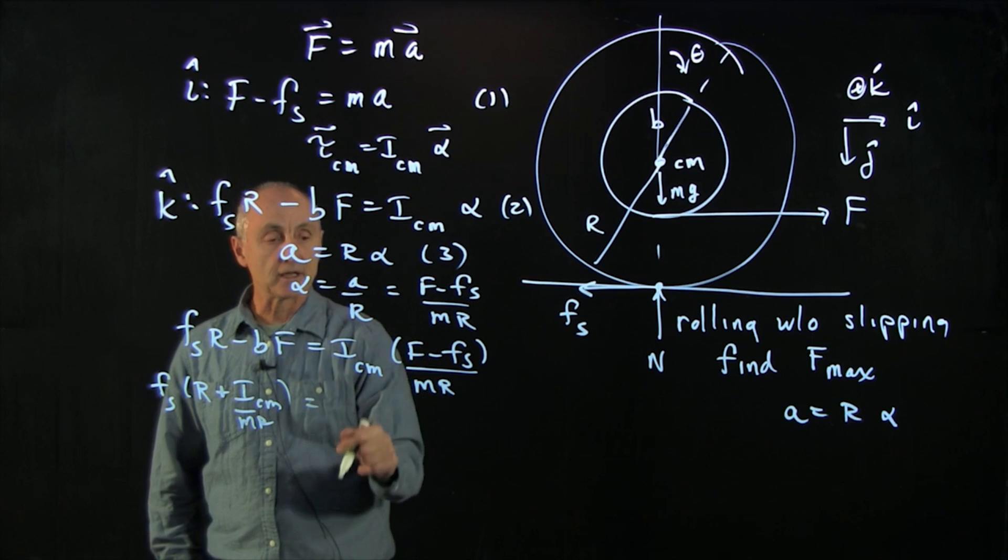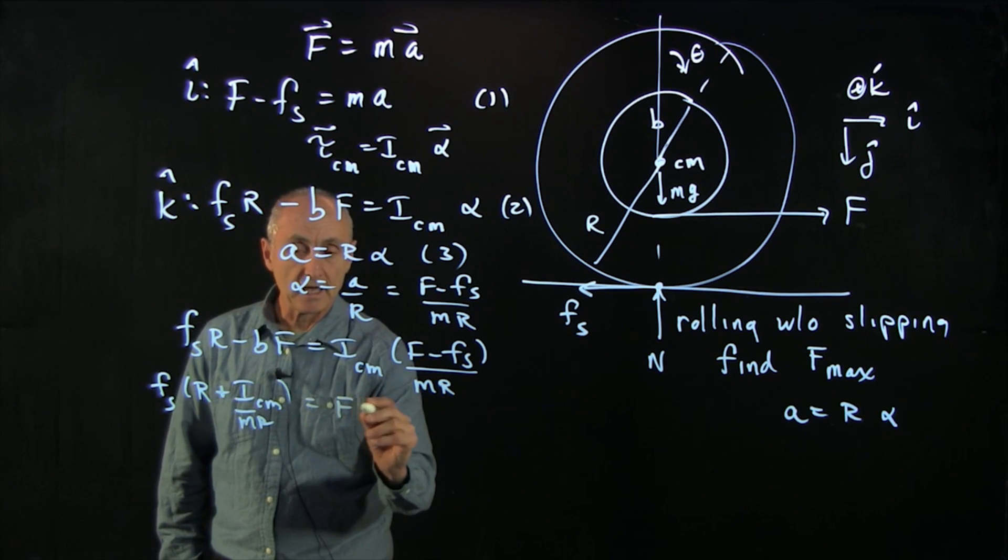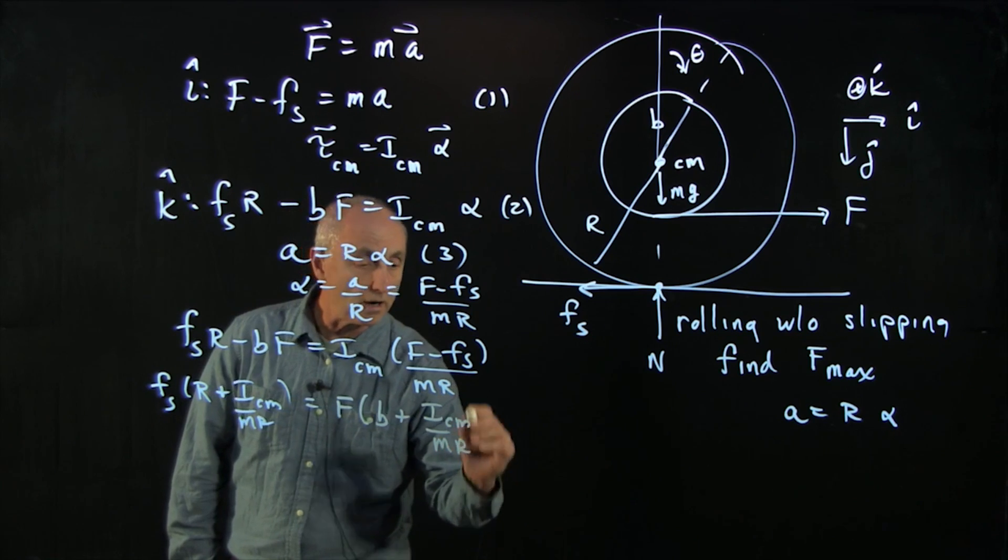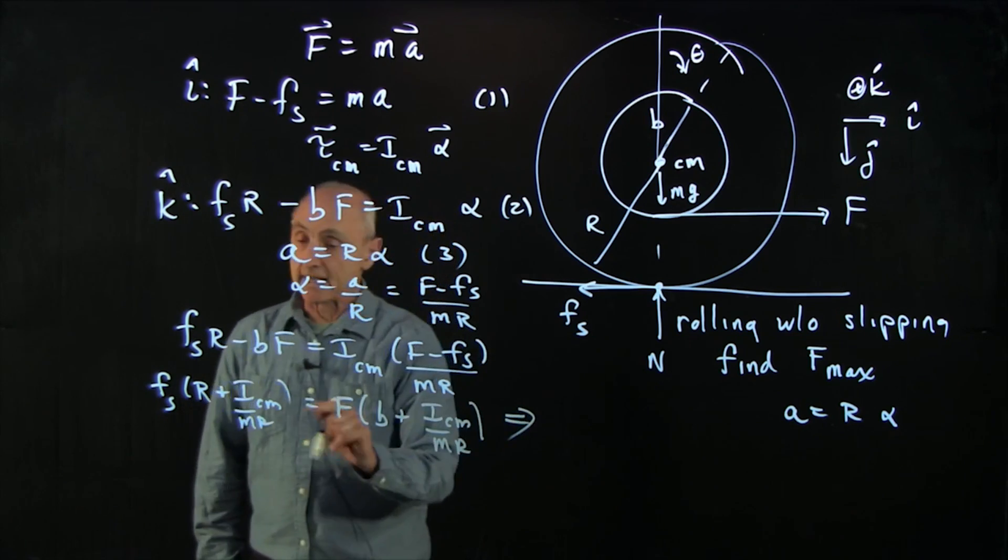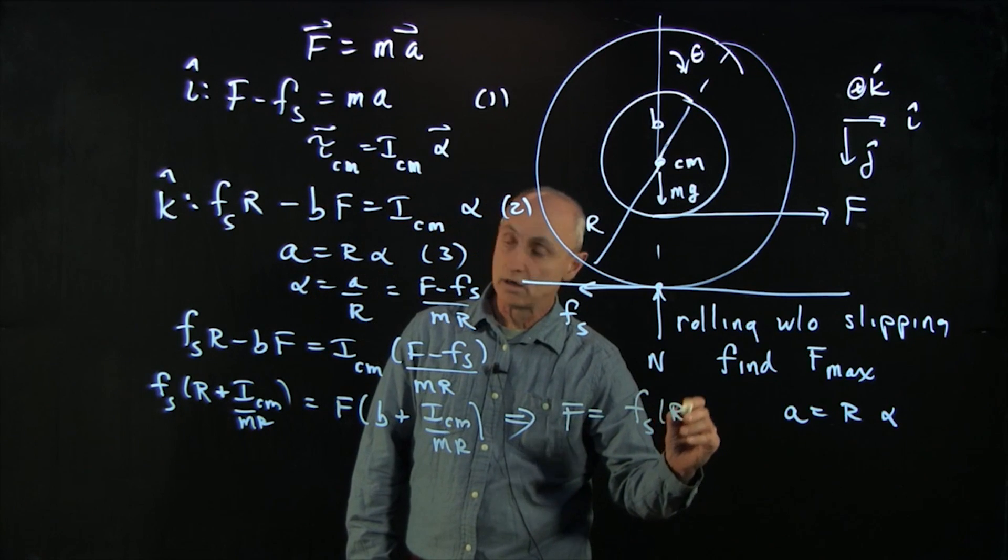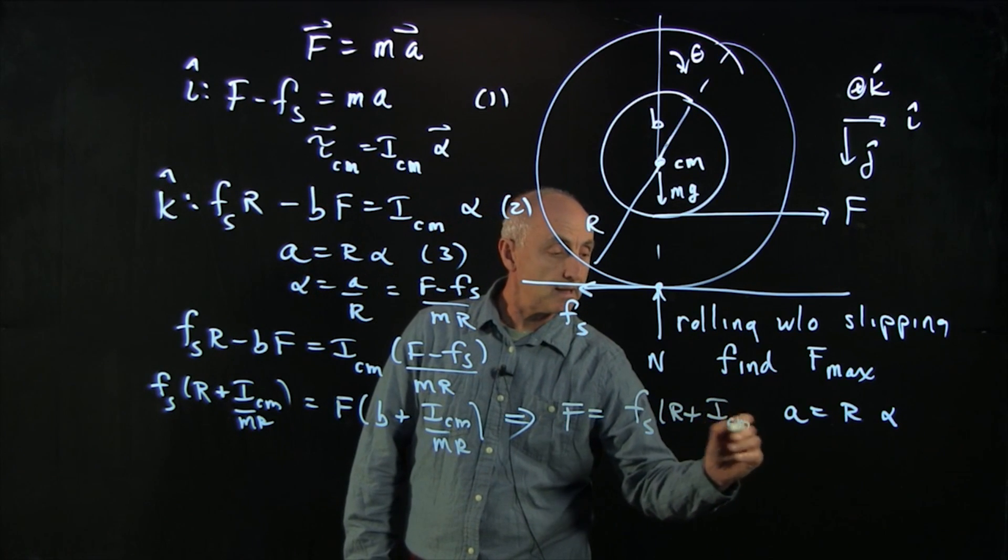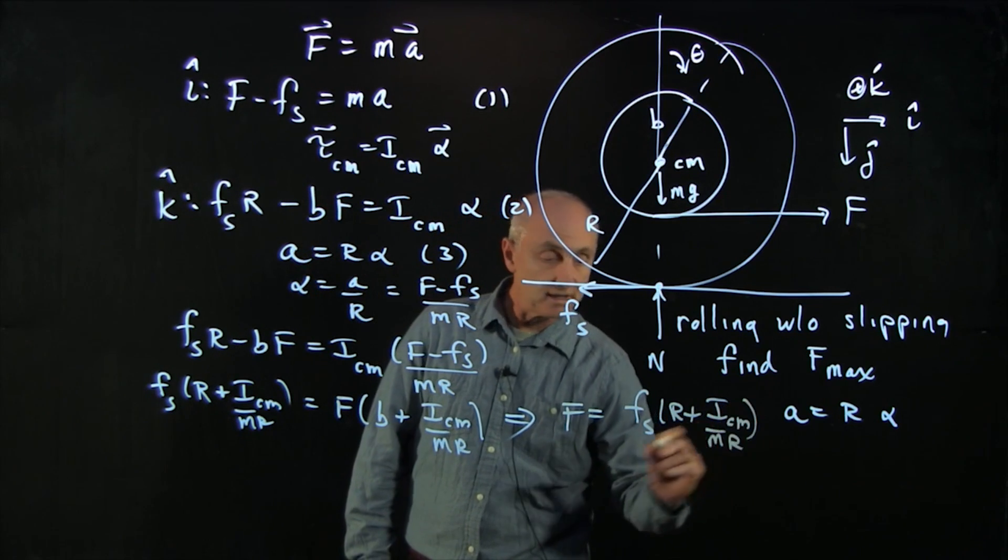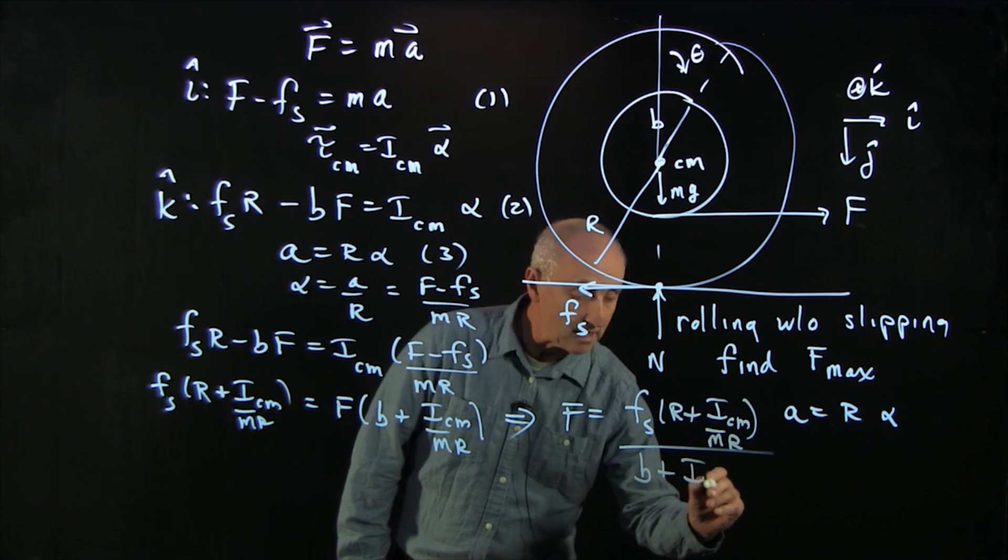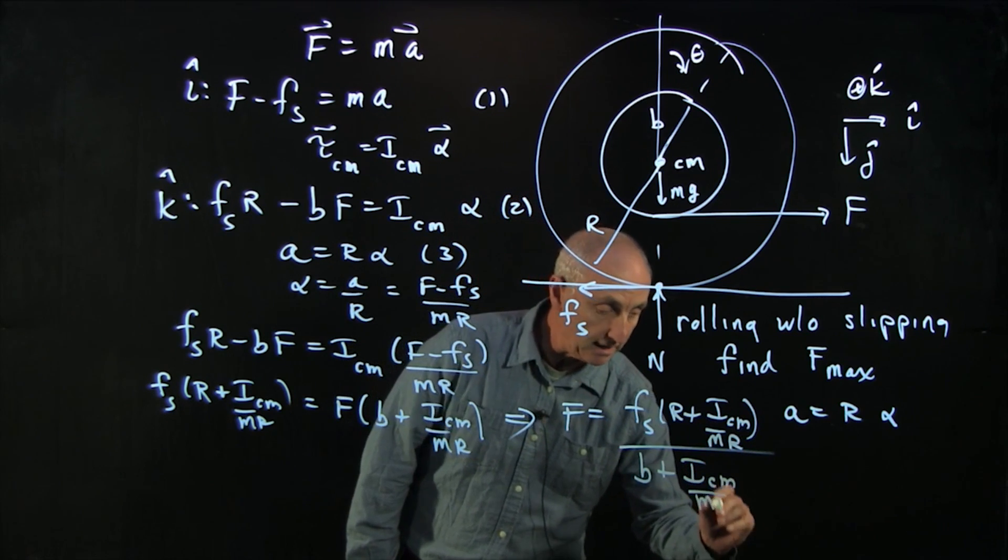And now I bring the f to the other side. And I get f times b plus I cm over m r. I can now solve for f. And I get f static r plus I cm m over r. It's a complicated answer. Divided by b plus I cm divided by m r.